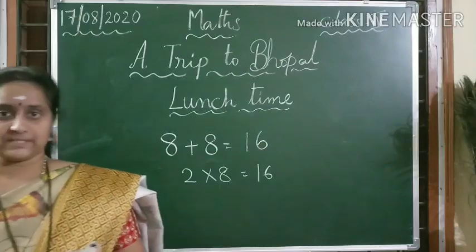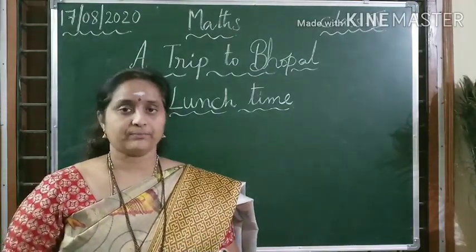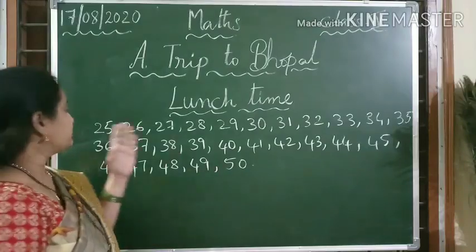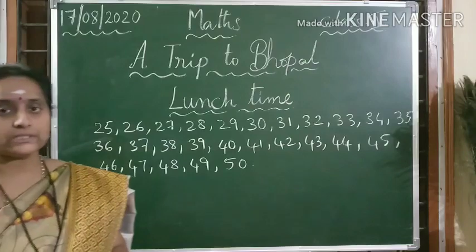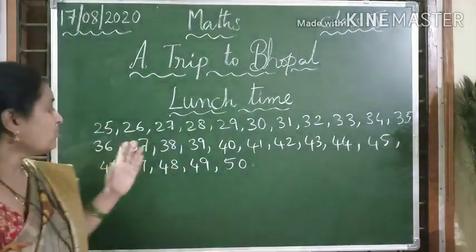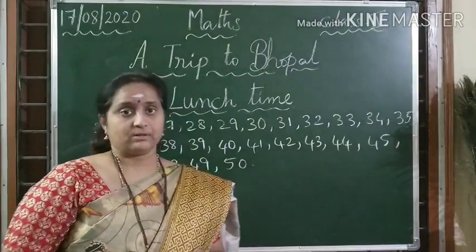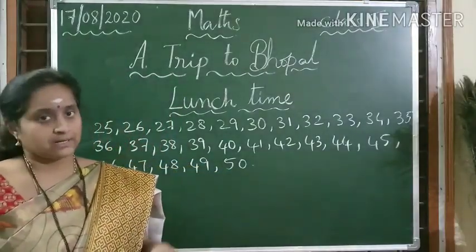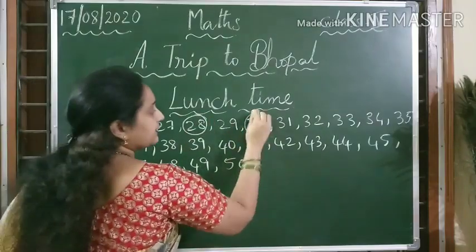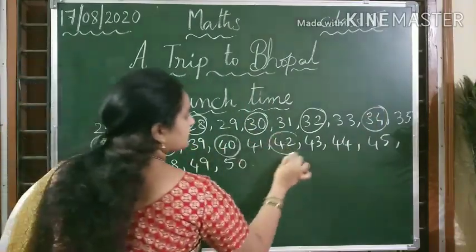Now let us see one more puzzle. Think of a number which can be divided by 2, 3 and 5 and comes between 25 and 50. Let us see the numbers between 25 and 50. We need to check which numbers are divisible by 2, 3 and 5. First, divisibility by 2 — we know 2 is an even number. Numbers ending with an even digit are exactly divisible by 2. So 26, 28, 30... these numbers are divisible by 2.